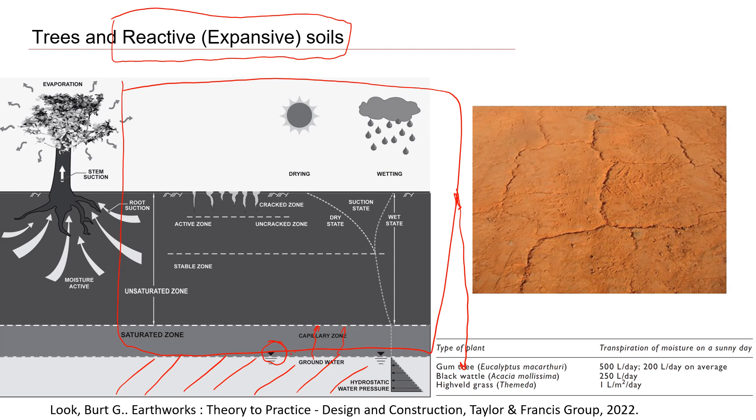You'll see that this capillary zone is relatively high compared, let's say, to sand or low plasticity silt. And above that, we have a stable zone. This is the zone that is not going to move during change in the season.